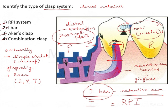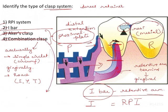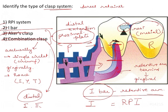Now, how do we eliminate the other options? Acres clasp and combination clasp are both occlusally approaching clasp arms, but in the image we can clearly see a gingivally approaching clasp, so both are automatically eliminated. One thing to remember: combination clasp is used for distal extension cases (Kennedy's class 1 and class 2), so you might get confused since this is also a distal extension case. However, the image shows a gingival approaching clasp arm, ruling those out.